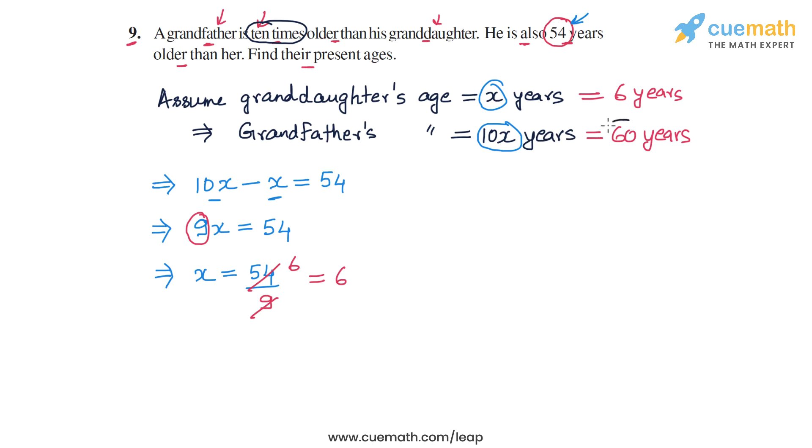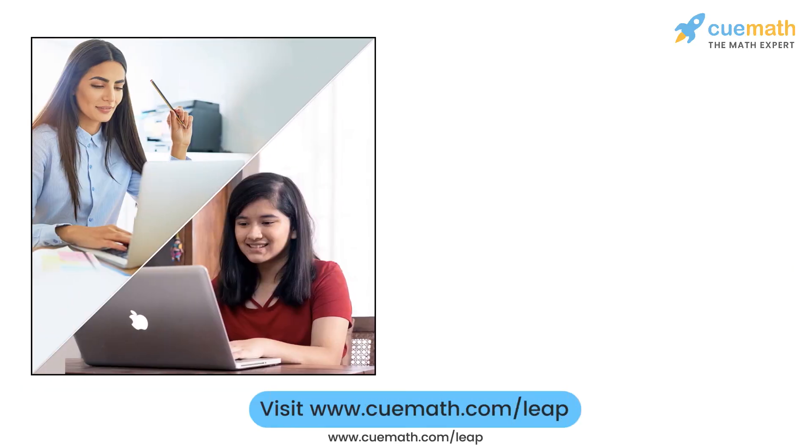Let's verify that this answer is correct. We see that the grandfather's age, 60, is 10 times the granddaughter's age, which is 6. And also we see that the difference between the two ages is 54 as told in the problem statement. So this answer is correct, their present ages are 6 years and 60 years, and this completes question number 9.